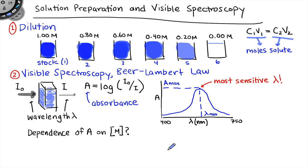Let's imagine what would a graph look like if we plotted absorbance as a function of molarity. More specifically, let's focus in on that most sensitive wavelength, looking at the absorbance at lambda max, we previously called that A max, as a function of the molarity of M.